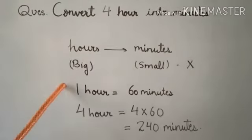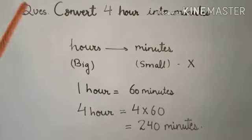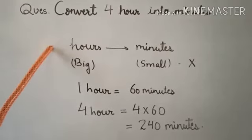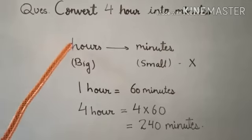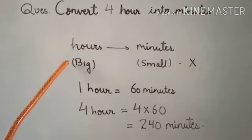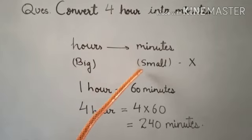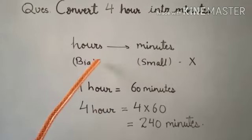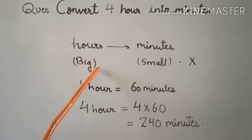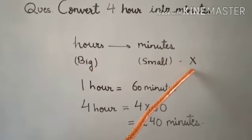Let's recall once again. We have to convert hours into minutes. Hours is a big unit, minutes is a small unit. When converting big to small, we multiply.